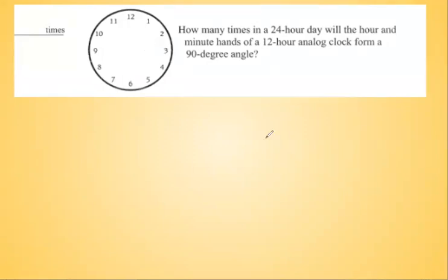Before we get into the problem itself, let's understand what's going on. We are looking for an angle measure that will give us 90 degrees between the hour hand and minute hand. You can start at 12, where the hour hand and minute hand are on the same point — the angle between them is zero degrees.